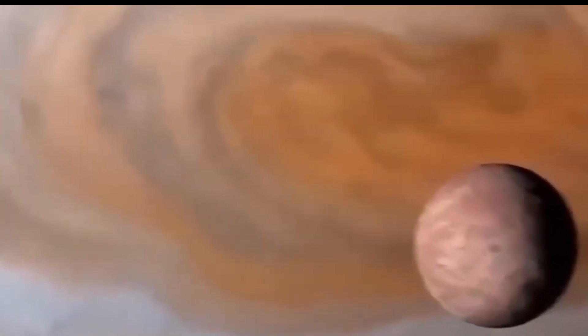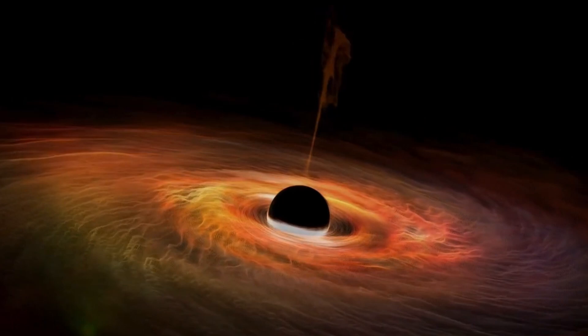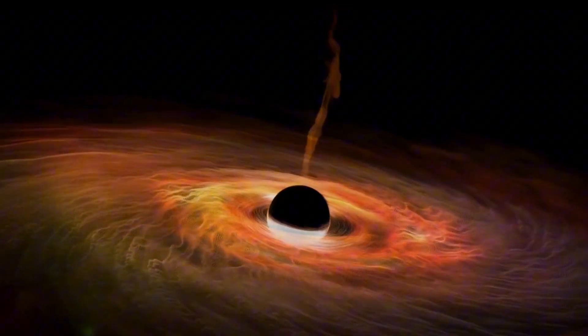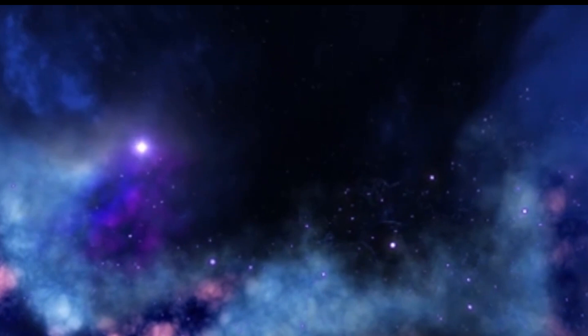Larger stars frequently burn through their hydrogen faster and die off sooner. Despite being only roughly 10 million years old, Betelgeuse is certainly nearing the end of its lifespan. Our sun, on the other hand, is still in its prime at approximately 5 billion years old.